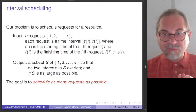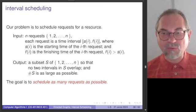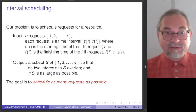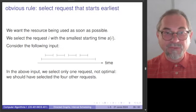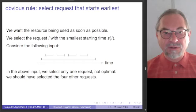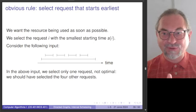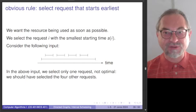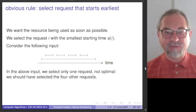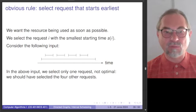When we think about greedy algorithms, we think about optimizing. We have a goal that we want to optimize, and we want to do this step by step. We want to do as many requests as possible, so we should start as soon as possible. This also applies to your own work scheduling — if you have to do as many jobs as possible in your day, you would start as soon as you can. So you select the request with the smallest starting time.